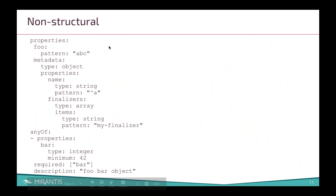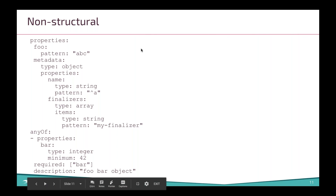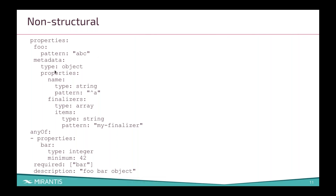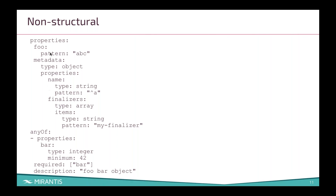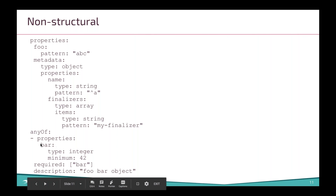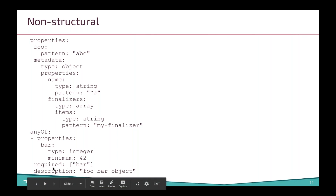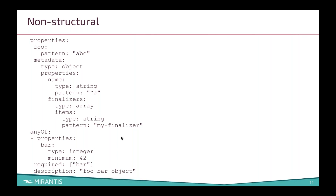So let's take a look at a non-structural schema. Here we have two properties: foo and bar. Why is this non-structural? We've got a few problems. First off, the actual object type is not defined at the root — so it's in the wrong place. The property bar is not defined outside of anyOf. The type for foo is not defined anywhere. The description is not defined outside of anyOf. So we're basically breaking all of the rules with this.